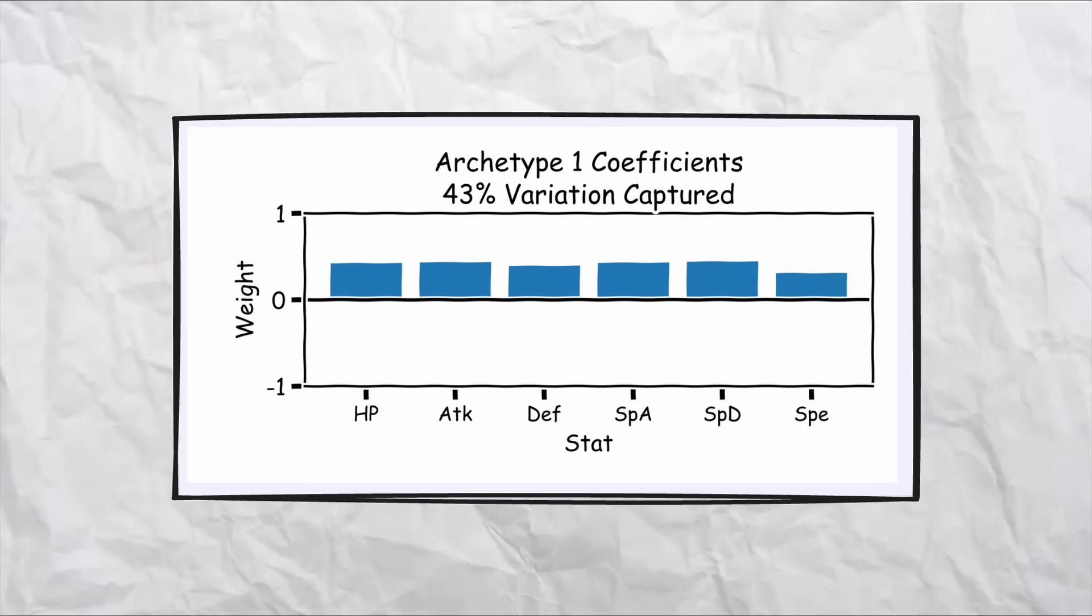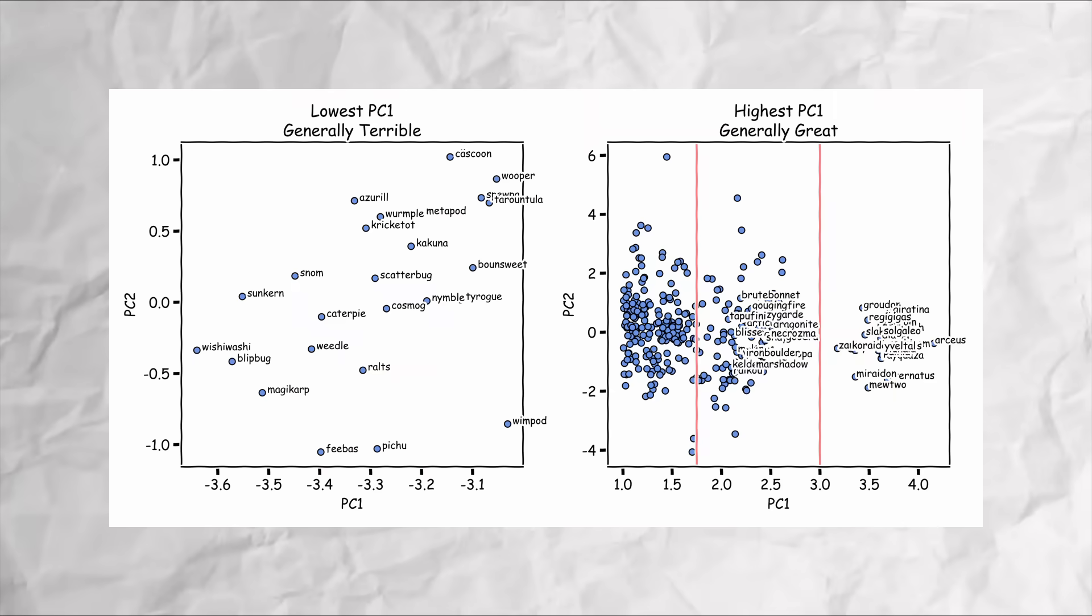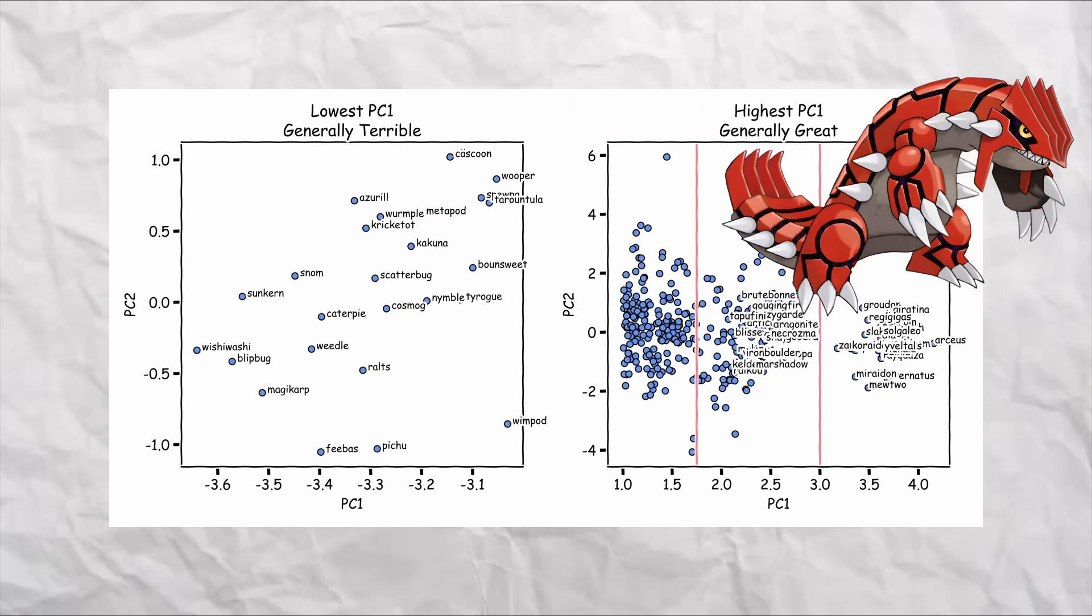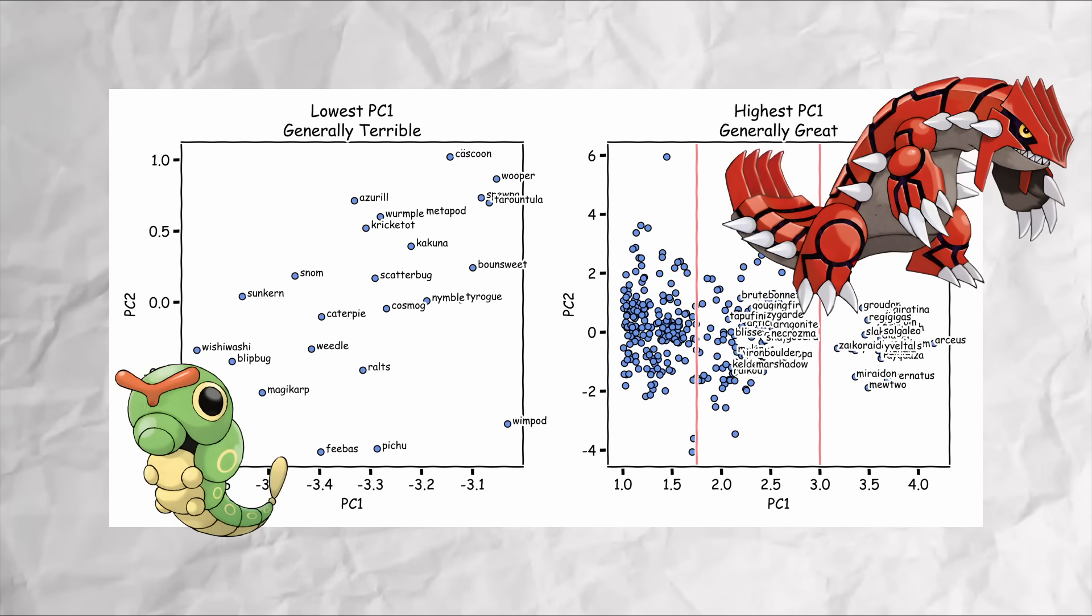And it's made up of a pretty equal weighted combination of all six existing stats, meaning that this archetype generally separates the good Pokemon from the generally bad Pokemon. The generally high base stat Pokemon from the generally low base stat Pokemon. Backing that up, we see that the mons with the highest values of this first archetype are legendaries like Groudon, Arceus, and Meridon. And the ones with the lowest values are the forgettable or early route mons that people never use like Weedle, Caterpie, and Magikarp.